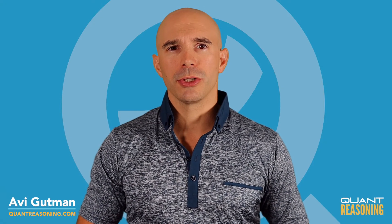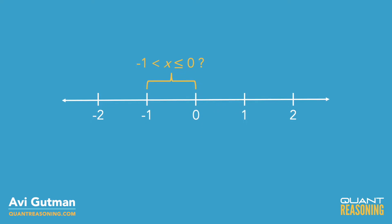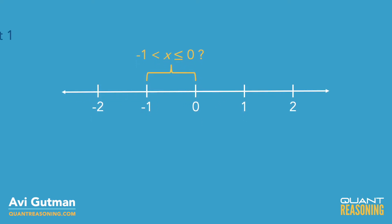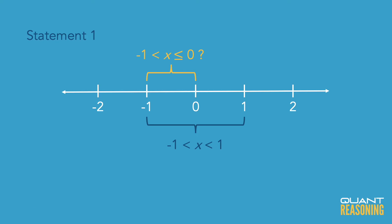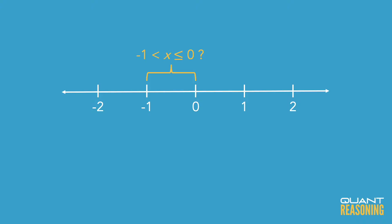Neither of these statements really answers our question. Statement one says we're somewhere in between negative one and positive one. So does that mean we're between negative one and zero? We might be there, but we might be on the other side of zero. So not sufficient. Statement two says we're below zero, but it doesn't say how far below zero. So are we in between negative one and zero, or are we below negative one? We don't know.